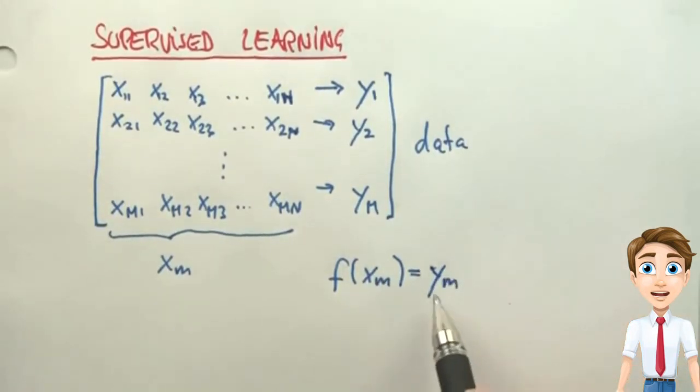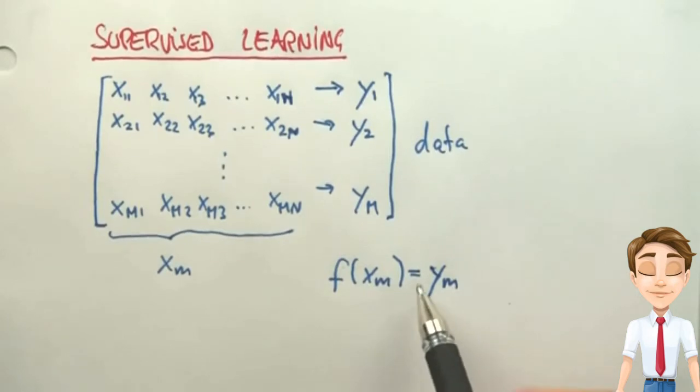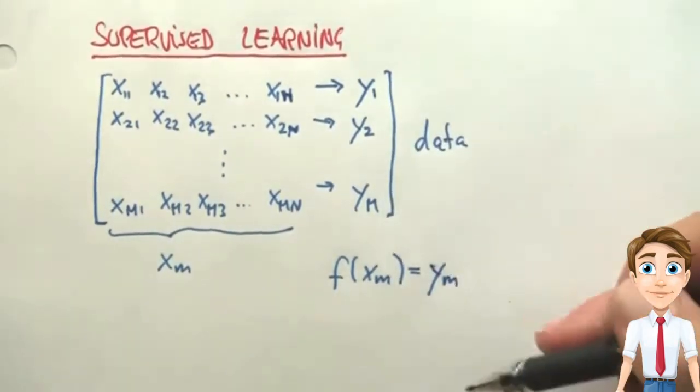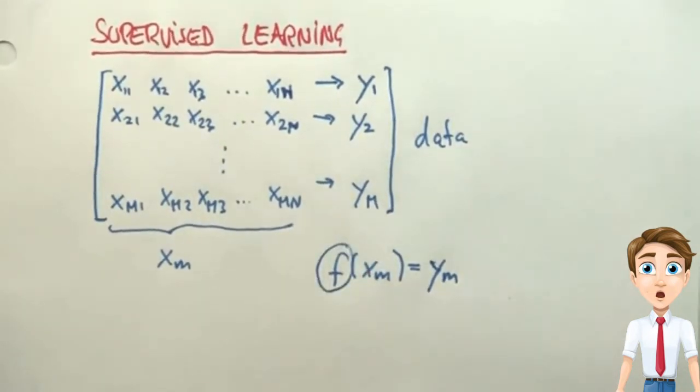Now this isn't always possible, and sometimes is acceptable, in fact preferable, to tolerate a certain amount of error in your training data. But the subject of machine learning is to identify this function over here.